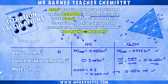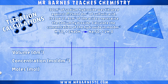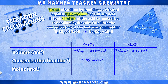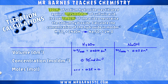So what happens if the ratio isn't 1 to 1? Let's look at a second question and put the information into the table. 30 centimetres cubed of sodium hydroxide — so 0.03 decimetres cubed — was titrated against 0.35 moles per decimetre cubed of sulphuric acid. It took 21.4 centimetres cubed of the acid — so 0.0214 decimetres cubed — to neutralise the sodium hydroxide. We have the volume and concentration of sulphuric acid, so moles is 0.35 times 0.0214, giving 0.00749 moles of sulphuric acid.